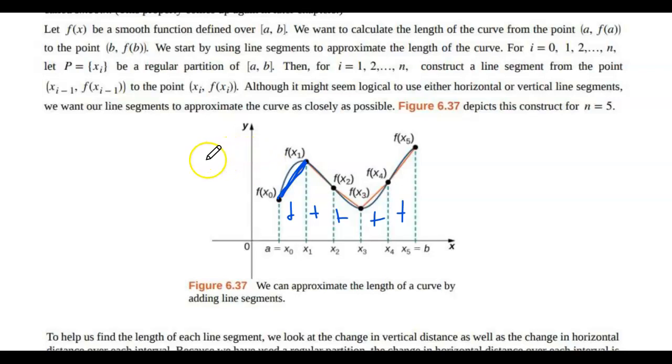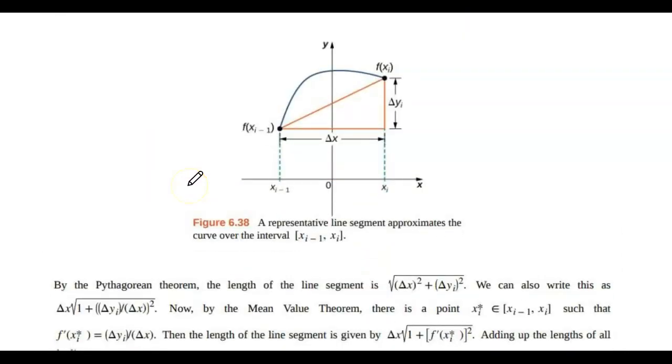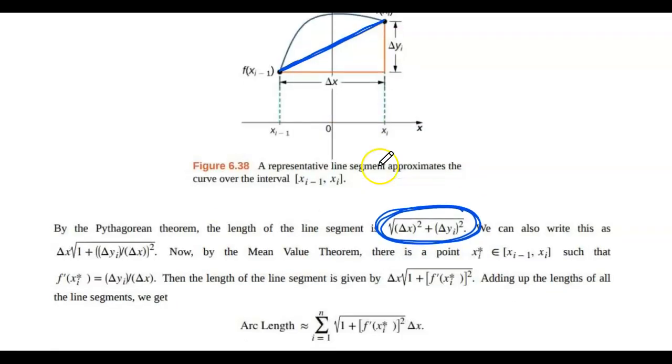One thing that I want to make sure that I point out here is that essentially we're looking at the Pythagorean Theorem. So for each one of those little pieces, you have your change in y over change in x to find this piece right here, and that is the line segment: change in x squared plus change in y squared. And then we're going to let that delta x get really small.